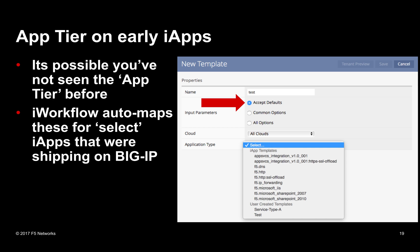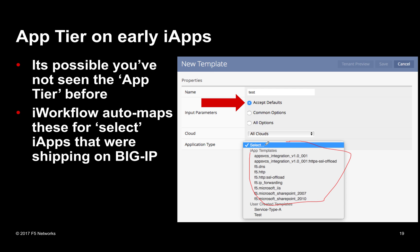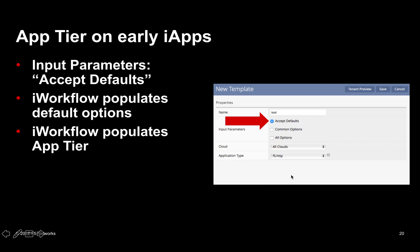These next screenshots are from iWorkflow 2.0. The reason you might not have seen the app tier is because we did something neat for easy onboarding: we took a list of iApps shipping with Big IP that we knew a lot about — we already knew what the attribute names were. So when you selected 'accept defaults' or 'common options,' we were able to pre-populate the application tier and defaults for you. With 'accept defaults' selected and F5.http chosen — one of those common pre-installed templates — there are no application tier options to edit because we did that bit for you.